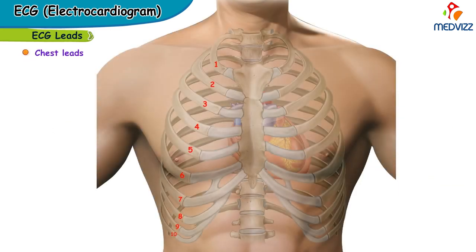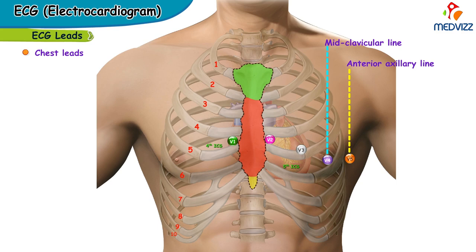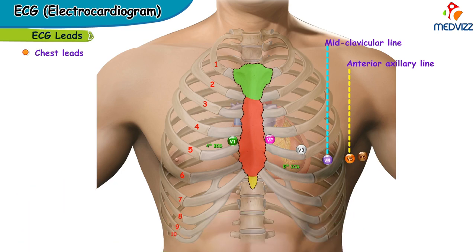The chest leads use the same reference electrode as the augmented limb leads, but the exploring leads are V1 through V6. V1 is placed in the fourth intercostal space to the right of the sternum. V2 is placed in the fourth intercostal space to the left of the sternum. V4 is placed in the fifth intercostal space at the midclavicular line. After placing V1, V2, and V4, V3 is placed midway between V2 and V4. V5 is placed along the anterior axillary line at the level of V4. V6 is placed in the midaxillary line at the level of V4.